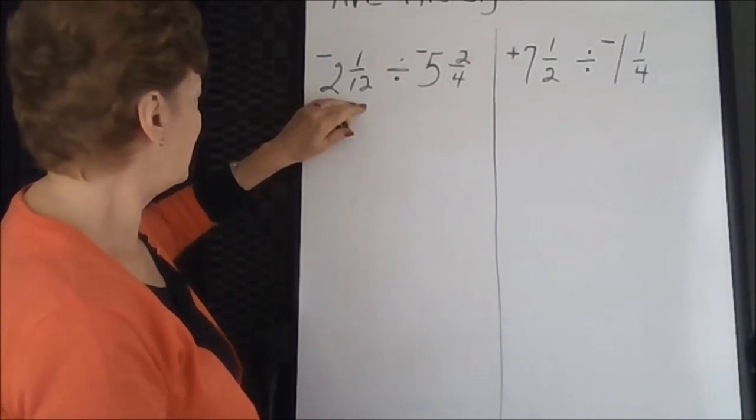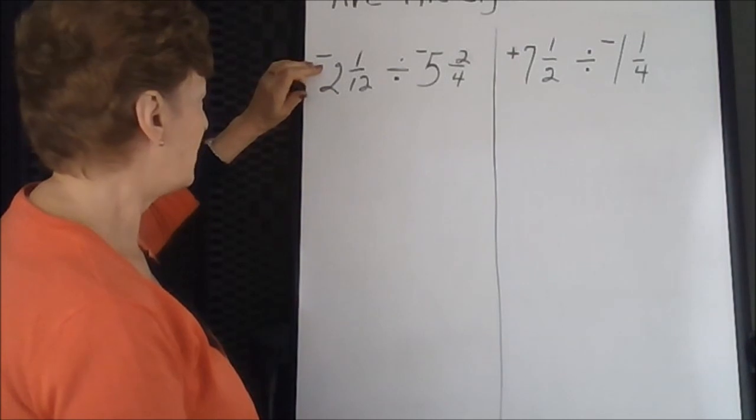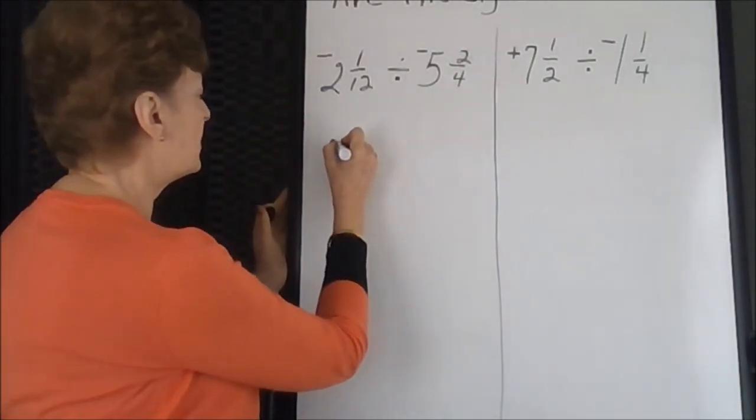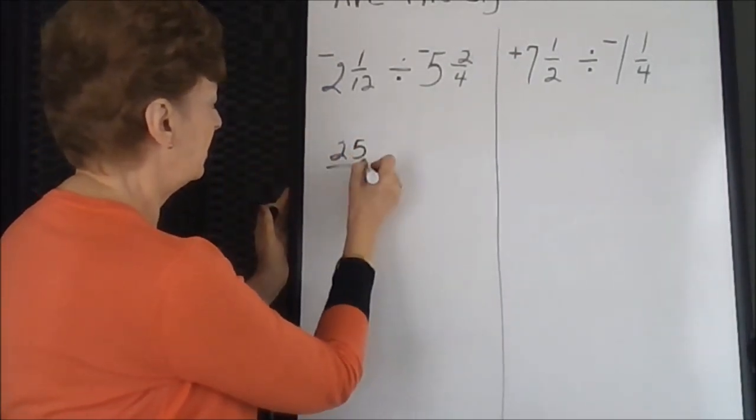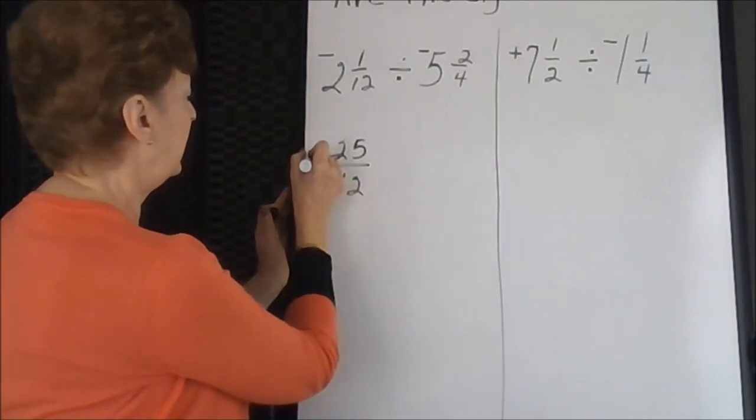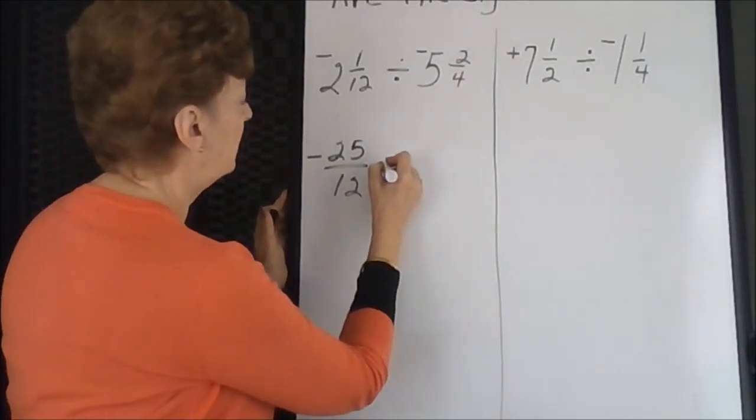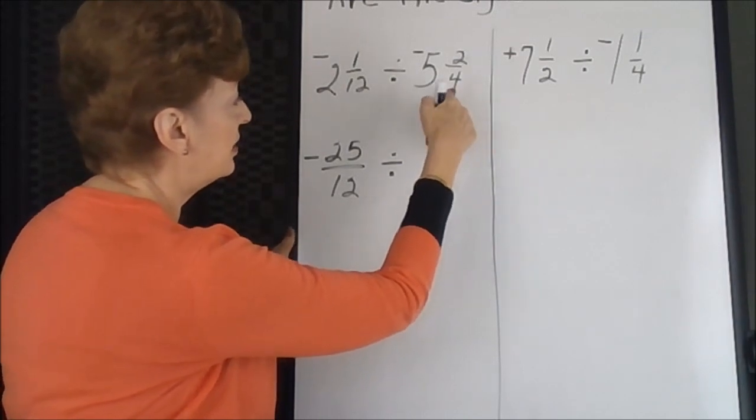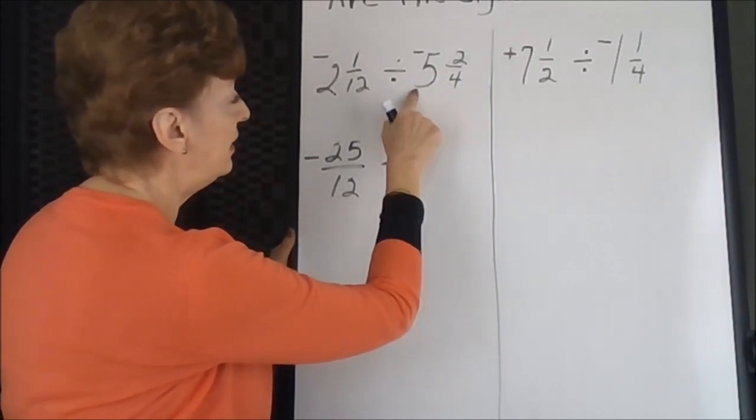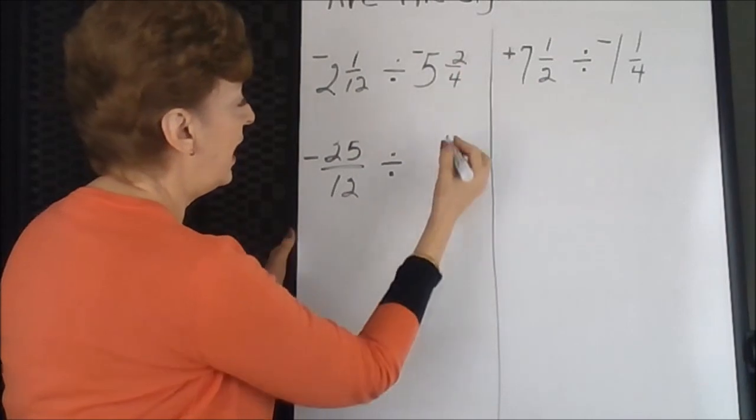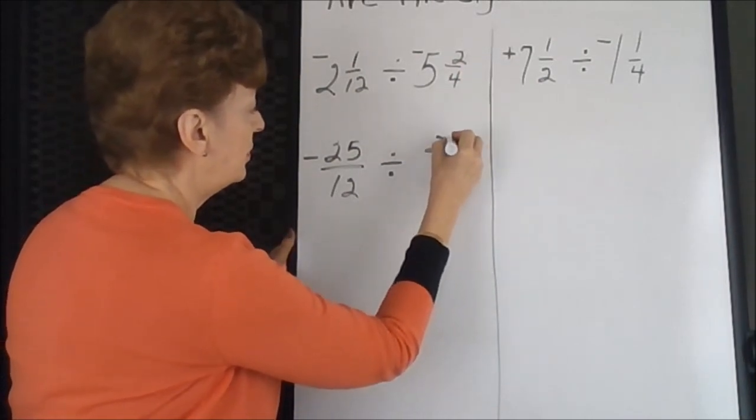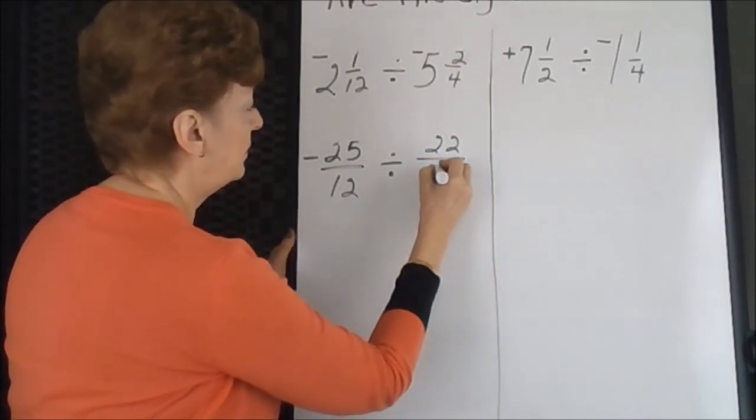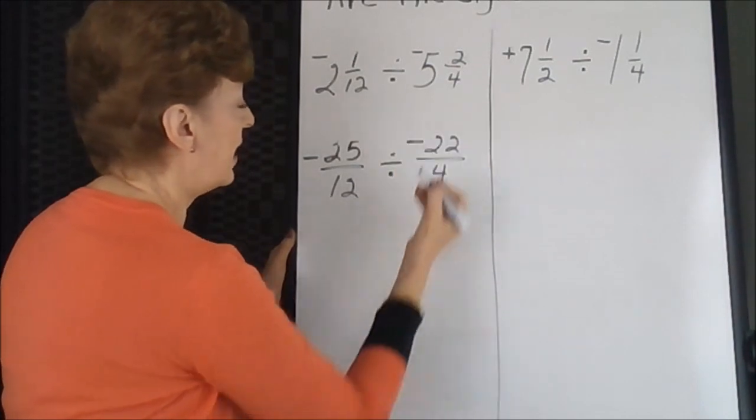Next, 12 times 2 is 24, plus one more is 25. Carry the sign with it. Change this to an improper fraction. 4 times 5 is 20, and 2 that you had gives you 22. Take the sign with it.